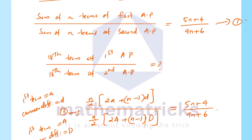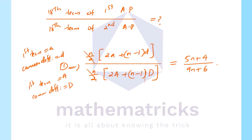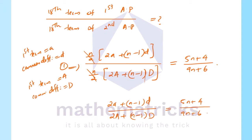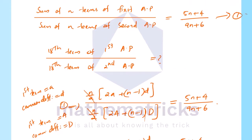We cancel n by 2 from both numerator and denominator. This gives 2a plus n minus 1 into d divided by 2A plus n minus 1 into D, equal to 5n plus 4 divided by 9n plus 6. The nth term of the first AP is a plus n minus 1 into d, and the nth term of the second AP is A plus n minus 1 into D.